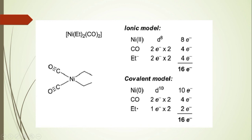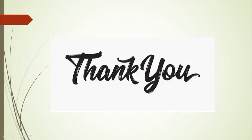This is an example for the 16-electron rule: a square planar complex. The central atom nickel has 10 electrons in the neutral atom method. CO donates 2 electrons, and 2 CO ligands donate a total of 4 electrons. The Et₃P ligand donates 1 electron, giving a total of 16 electrons. In the oxidation state method, nickel in the +2 state has a d⁸ configuration (8 electrons), CO donates 2 electrons each (4 total), and Et⁻ donates 2 electrons, reaching a total of 16 electrons by the oxidation state method.